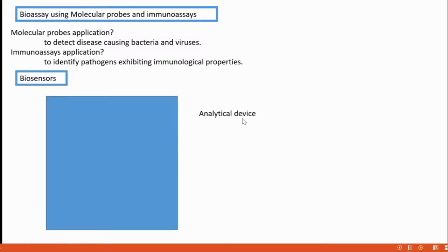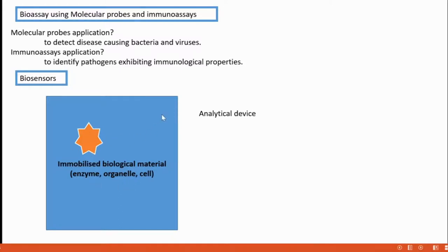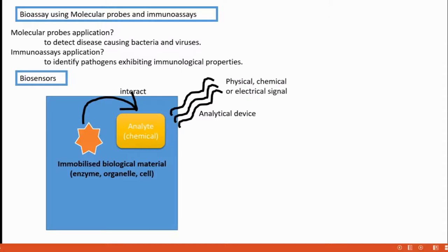Biosensors are analytical devices in which biological material — such as an enzyme, organelle, or cell — is immobilized. When a chemical sample is introduced and interacts with the immobilized biological material, the device produces physical, chemical, or electrical signals whose readings indicate the concentration of that chemical. For example, BOD biosensors give the BOD value within 15 minutes, compared to the conventional five-day BOD test.